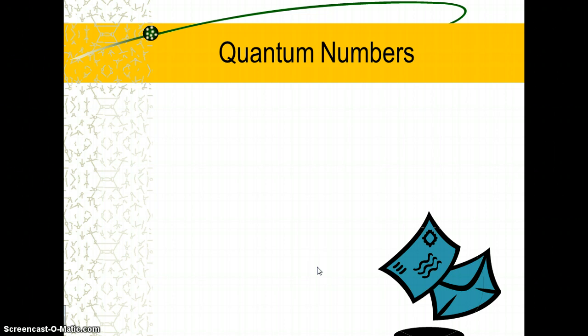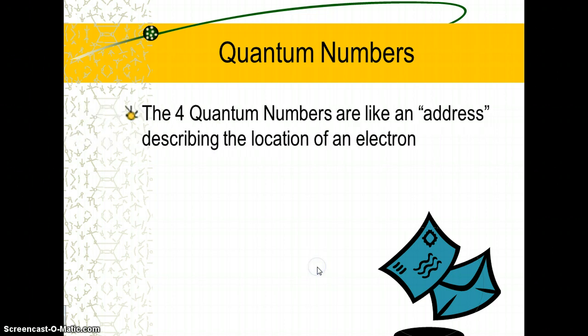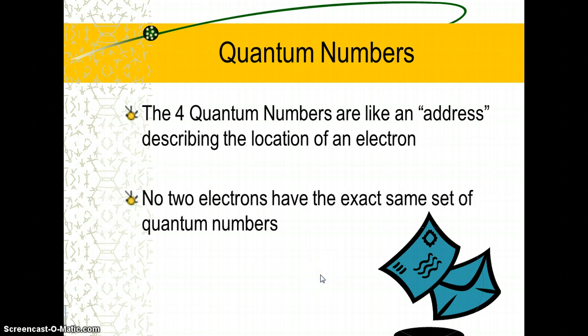When we describe a specific electron, we use a set of quantum numbers that describe it — kind of like an address. If you're delivering a package, there are several pieces of information needed: the state (Pennsylvania), then the city (York), then the street (Taxville Road), then the house number. No two houses have the exact same set of all four pieces of information. Similarly, quantum numbers narrow it down to one specific electron, and no two electrons have the exact same set of quantum numbers.